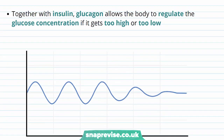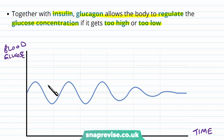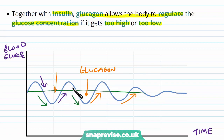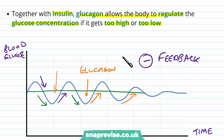And because of this, working with insulin, glucagon allows the body to regulate the blood glucose concentration if it gets too high or too low. So if we were to look at a graph with time on the x-axis and blood glucose on the y-axis, if the blood glucose deviates away from an optimum level whereby it drops too low, then the alpha cells of the pancreas respond and they release glucagon where it brings the change back and reverses it to an optimum level. So insulin helps to bring it back down if it gets too high, and glucagon brings it up if it gets too low. This is all negative feedback, where insulin and glucagon are the antagonists of each other.